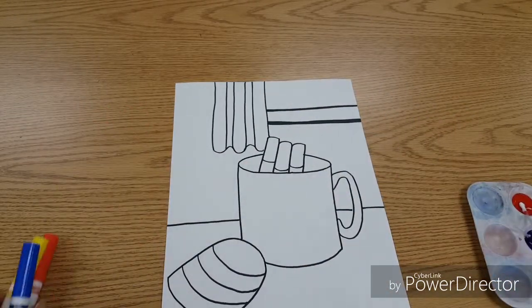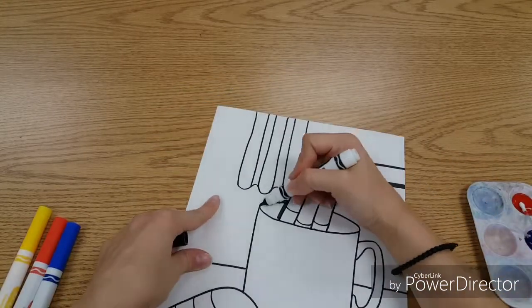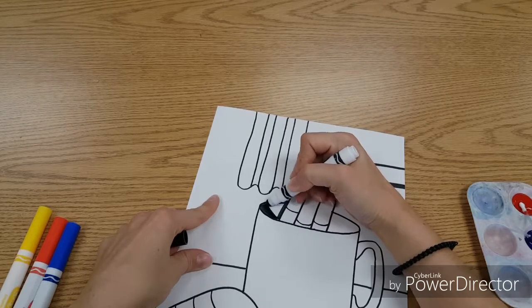For example, on my cup, I would fill in the inside with black marker to make it look darker.